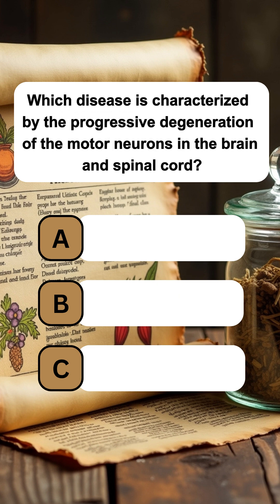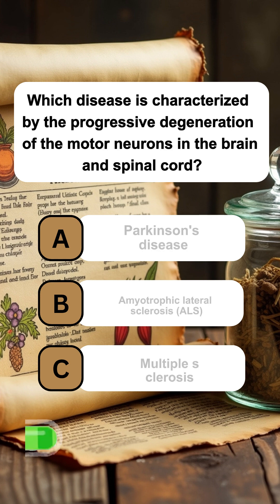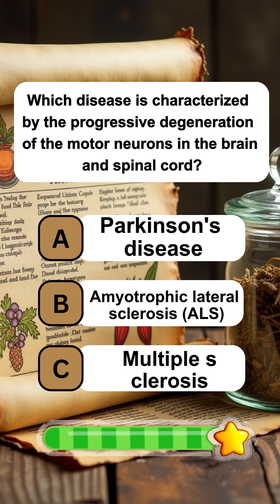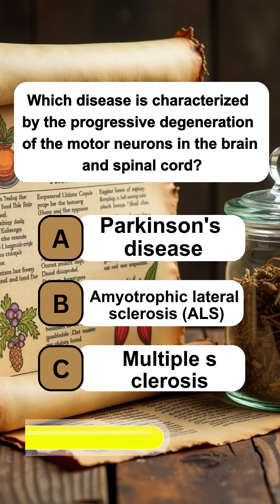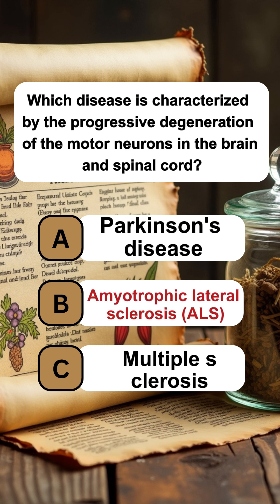Which disease is characterized by the progressive degeneration of the motor neurons in the brain and spinal cord? The answer is B: Amyotrophic lateral sclerosis, ALS.